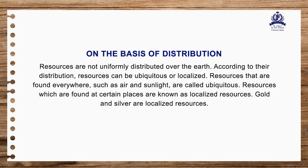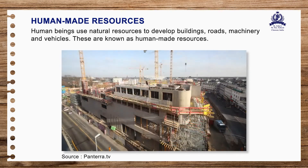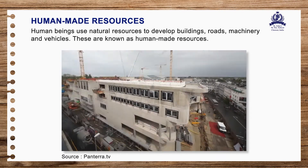On the basis of distribution: resources are not uniformly distributed over the earth. Resources that are found everywhere, such as air and sunlight, are called ubiquitous resources. Resources which are found only at certain places are known as localized resources — gold and silver are localized resources.